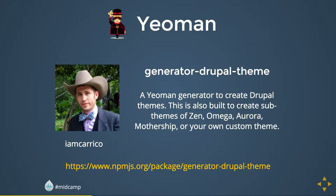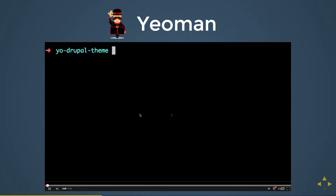It's a Yeoman generator for creating themes — it helps you create custom themes and sub-themes, and really emphasizes developer themes like Zen, Omega, Aurora, and Mothership. It's pretty awesome because it downloads a lot of the tools I'm going to talk about. You have the option to download Grunt or Gulp or both, then it runs a bundle install for you and installs all the needed libraries, automagically downloading all the needed scaffolding for your theme — your dot info file, your Sass directory, image directory.